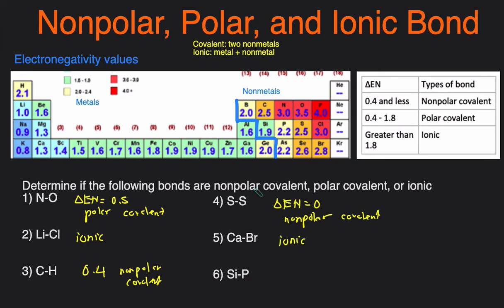Last one, Si and P. Si is over here, and P is over here. So you have two non-metals, meaning it's going to be covalent. So then we look at the difference, and the difference is 0.3, 2.2 minus 1.9. So 0.3 would fall in the category of non-polar covalent.